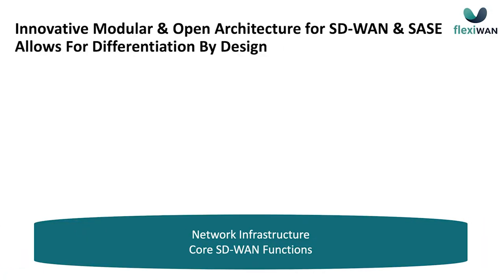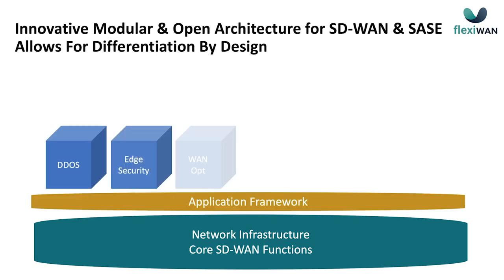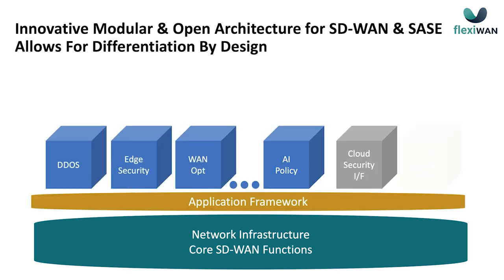Going back to the application store: technically, we take that big box of features and slice it into horizontal layers. You have the core networking functions as the base layer, the core SD-WAN functionality as a base layer. On top of that, we have the application framework, and on top of that, you can have multiple applications — examples of applications that can run in the data flow of the router itself, as Linux applications on the Edge device because it's standard Ubuntu Linux, or in the management system.